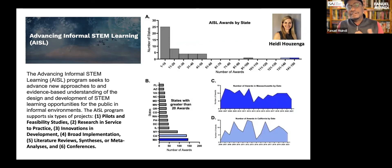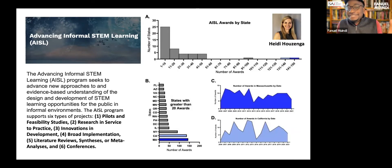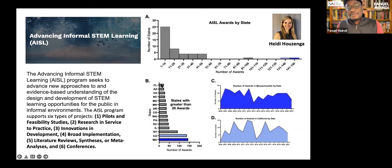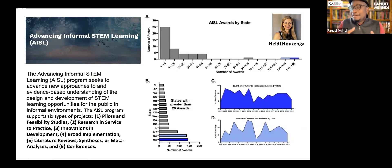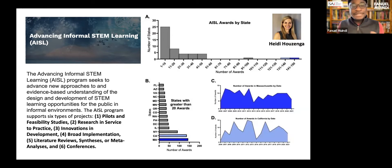A research associate in my lab, Heidi, has been working on this. We looked at which states are getting the most money — it turns out California and Massachusetts are getting a lot of these grants. You can look at figures showing these high-award states, and when you look across time you see very interesting temporal patterns: the ups and downs, those coming up, those that are plateaued, and those coming down. Stay tuned for the formal report we're releasing very shortly.